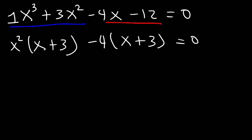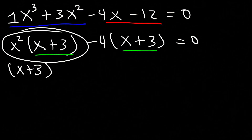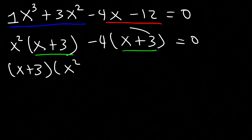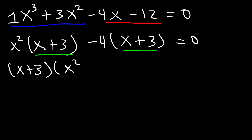And so if you see this common factor, let's take out x plus 3. So this whole thing divided by x plus 3 is x squared, and this whole thing divided by x plus 3 is negative 4.